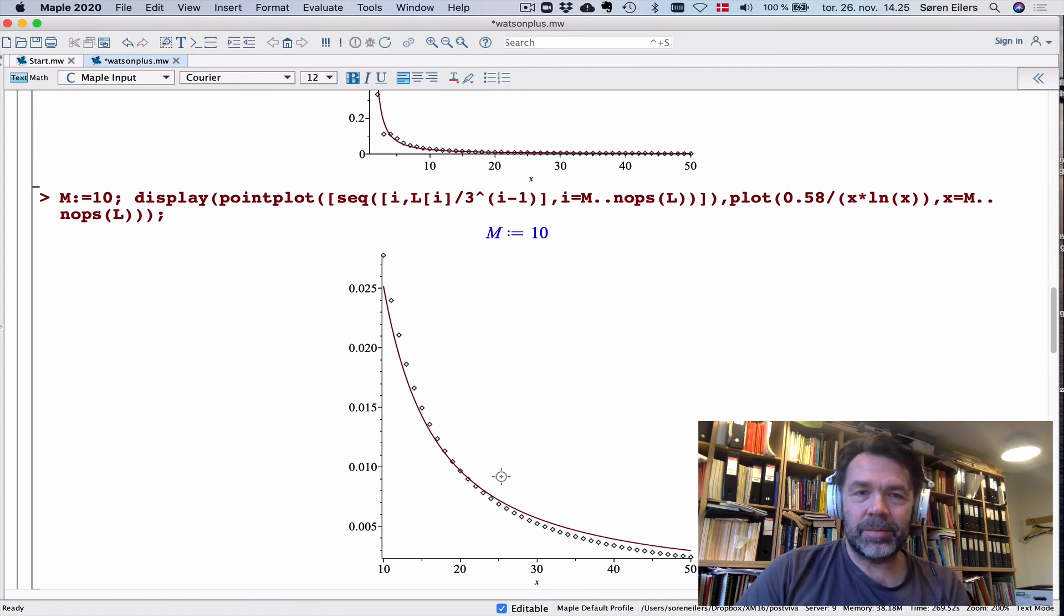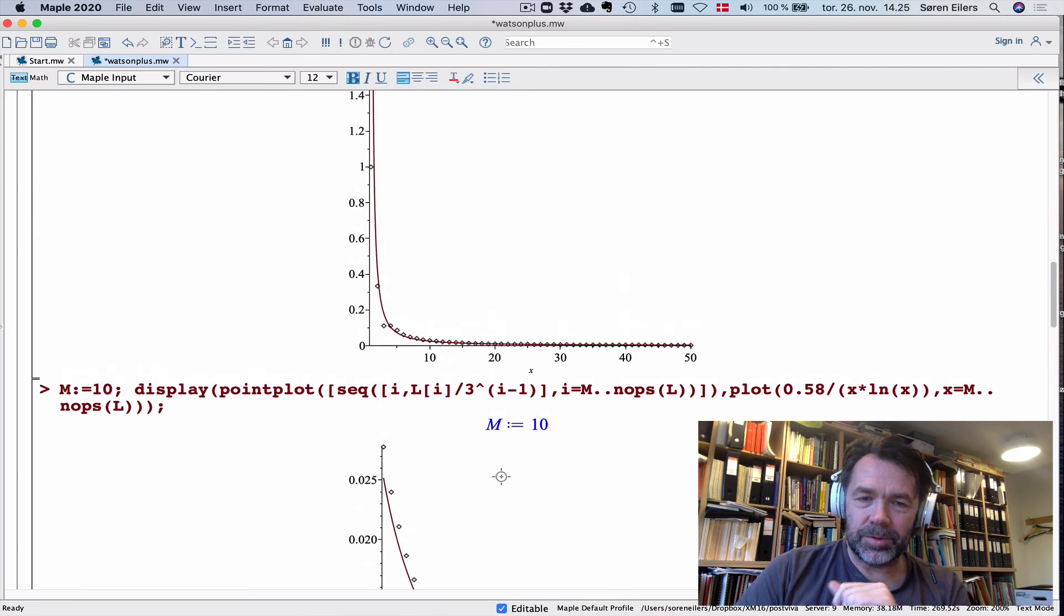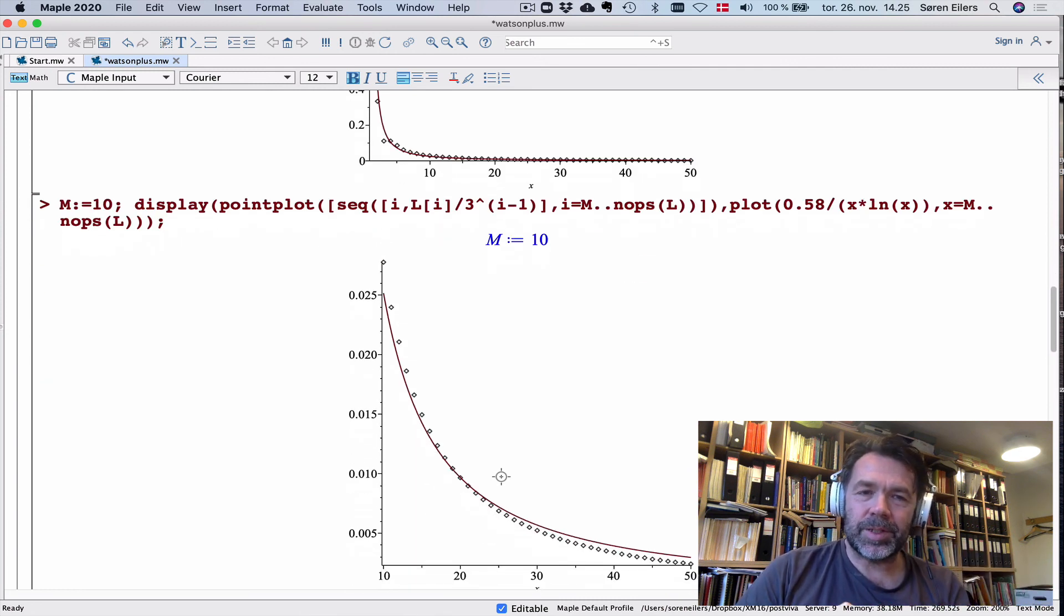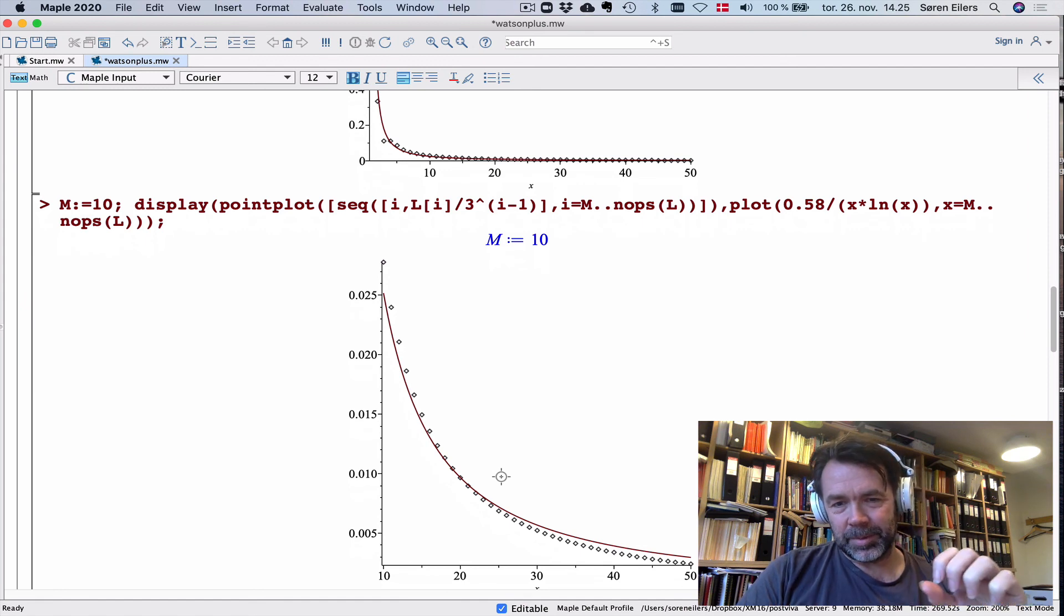It's the same graph as the one I showed you just up here, but I cut away the uninteresting part. That means I can much better see what's going on. When I do that, you can see the curve here is not really consistent with the curve down here.